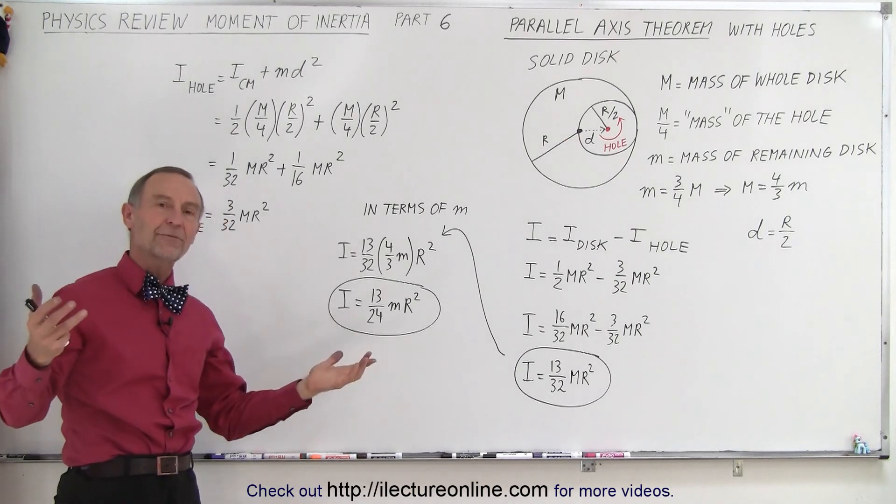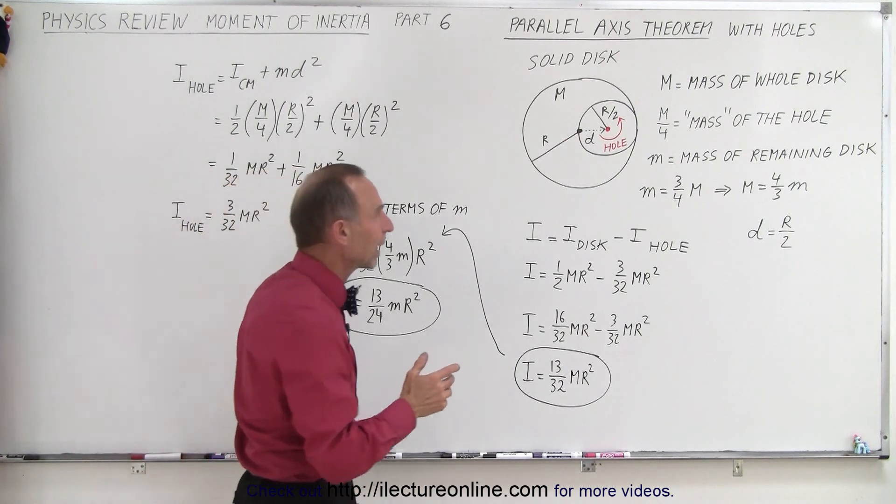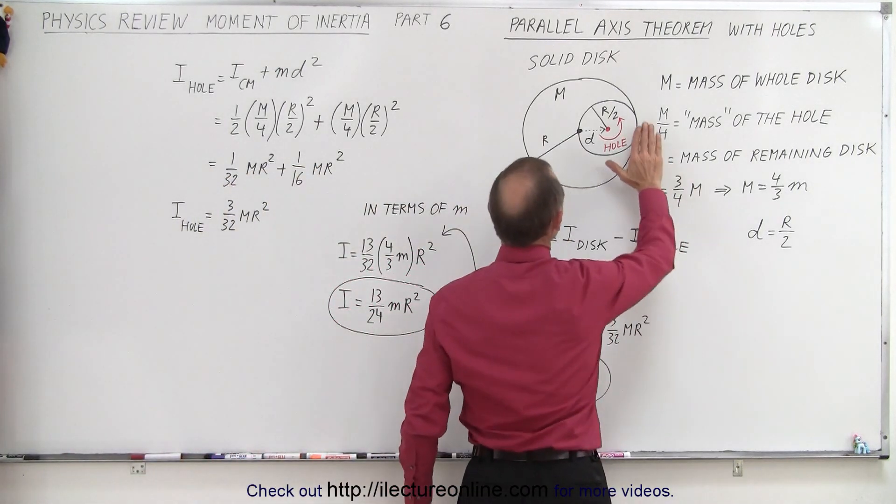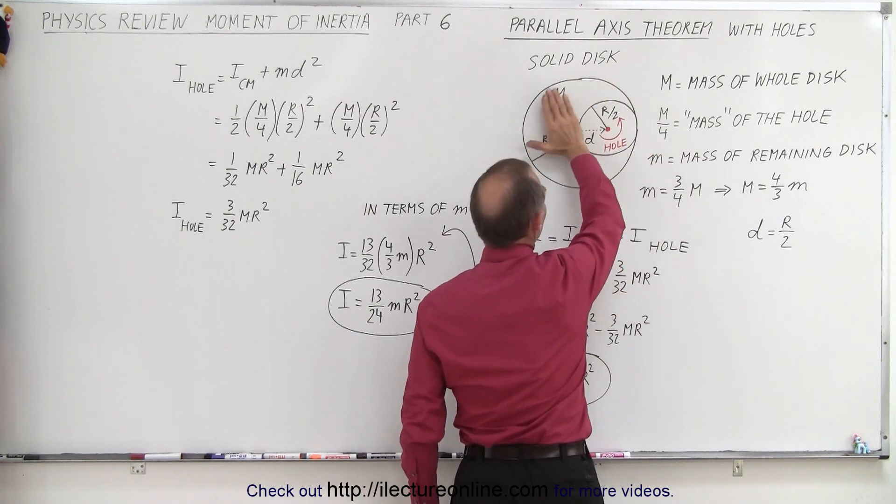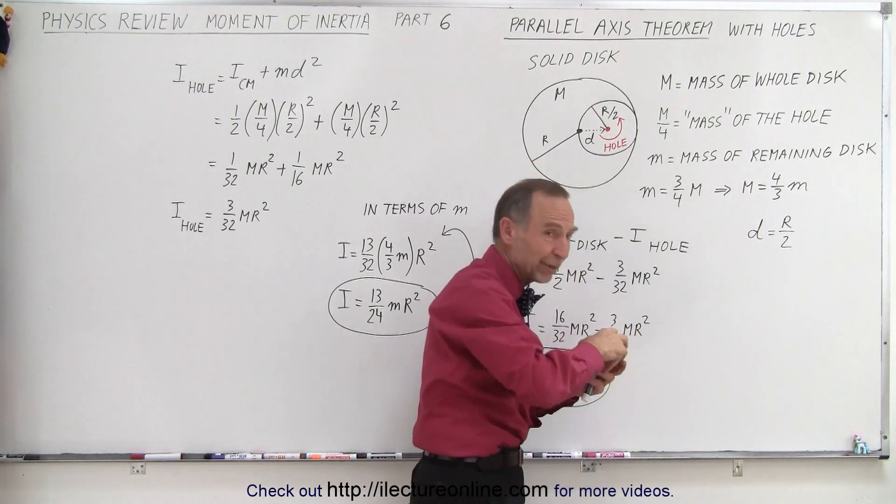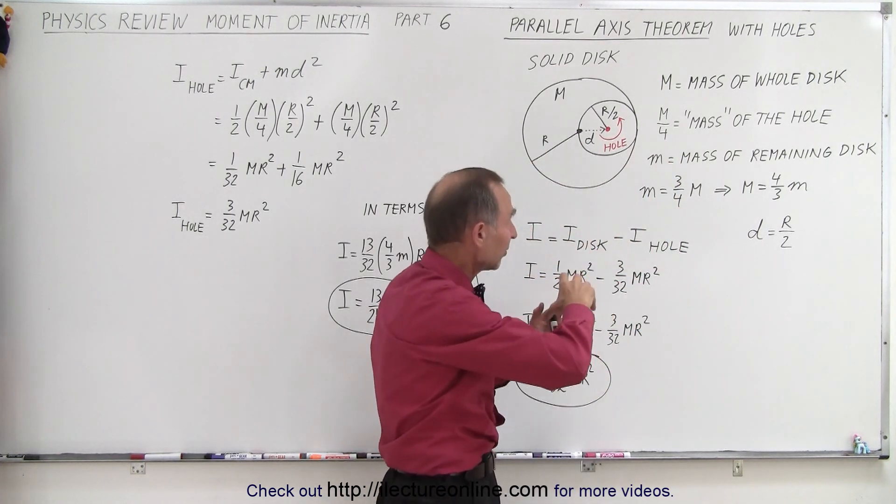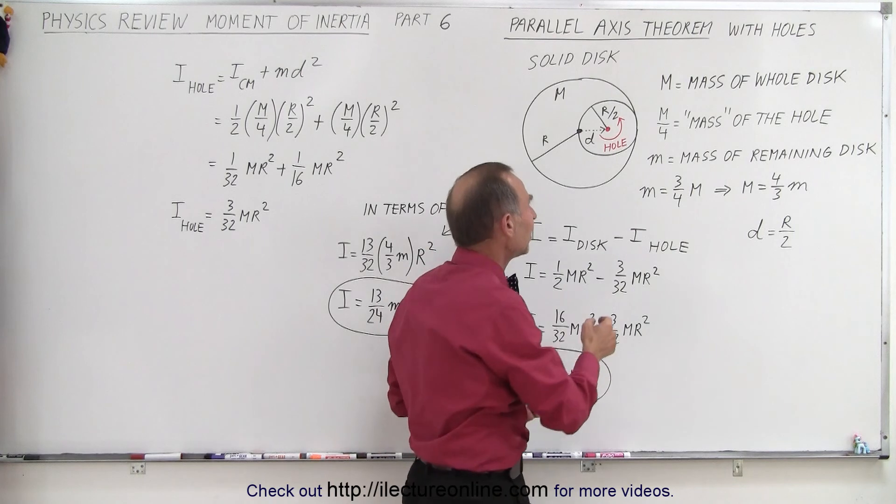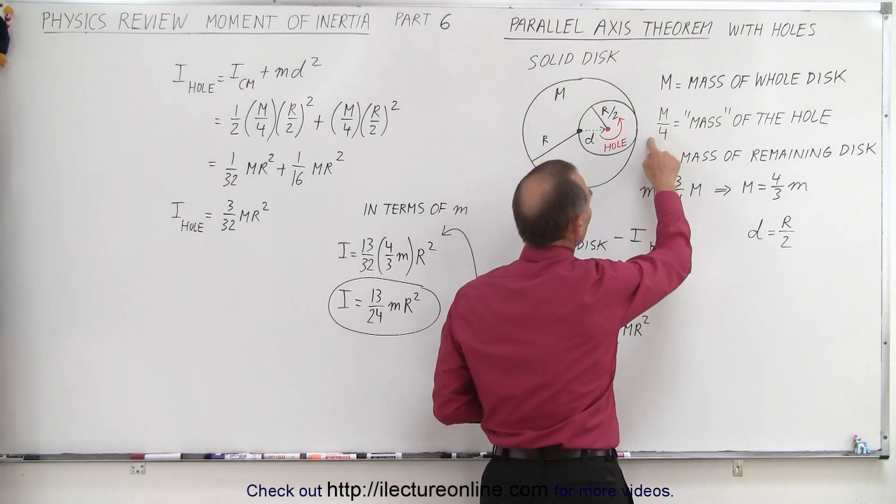Now you say, wait a minute, holes don't have mass. Well the way you look at it is as follows: let's assume that big M represents the mass of the whole disc if the hole wasn't there. So then the mass of the hole, or the piece you cut out, the mass of that missing piece would be a fourth of the total mass.